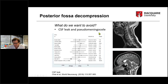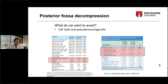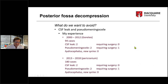CSF leak and pseudomeningocele — getting a watertight closure is really important. Some people would say that's an acceptable result from surgery, but I don't think it's acceptable. I'm not saying it's necessarily bad surgery, but that's not what we're trying to achieve. The rates published in the literature from some series are incredibly high. But if you talk to people around the world who do many Chiari operations, they have nothing like those rates — it's much more like 1%. It's not that it never happens, but it's a much lower rate than some publications suggest.